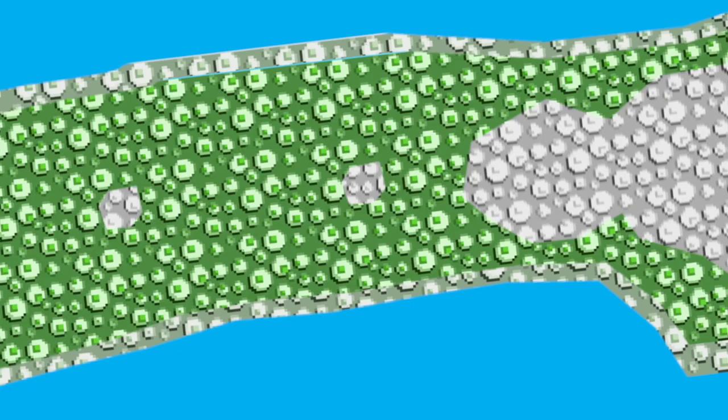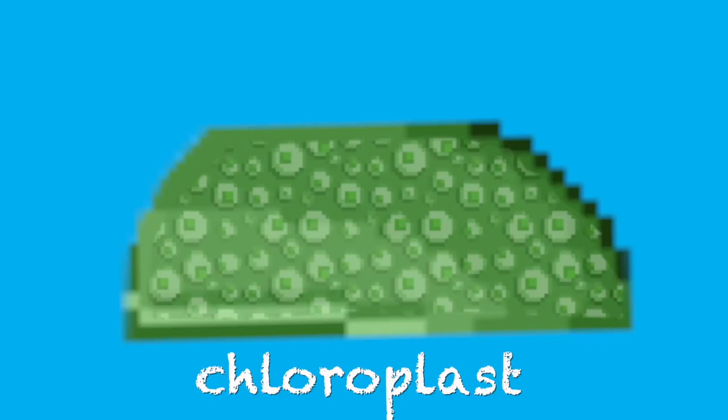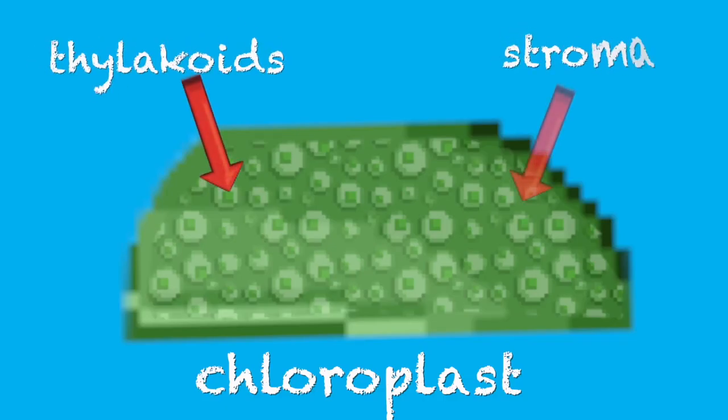In plants, photosynthesis usually takes place in any area that is green, mostly in the leaves, specifically in the mesophyll chloroplasts. This organelle has inner parts such as the thylakoid and stroma.